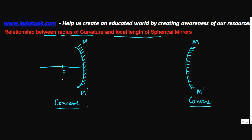Now what we saw earlier was that in case of a concave mirror, the focal length lies somewhere here and the radius of curvature is something like this.